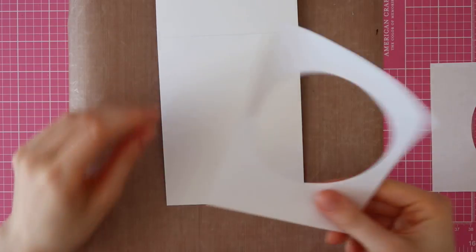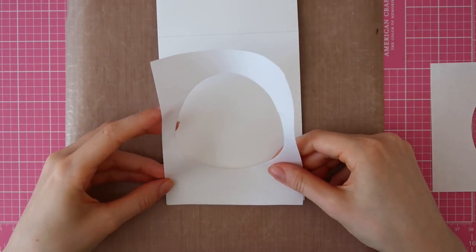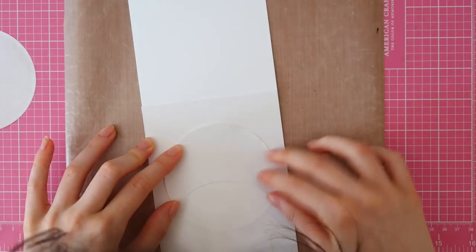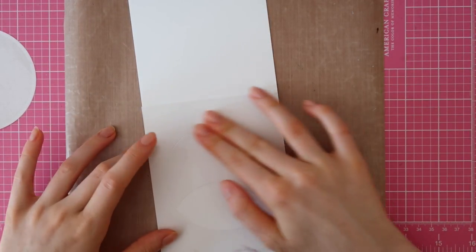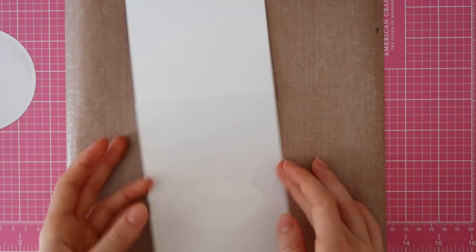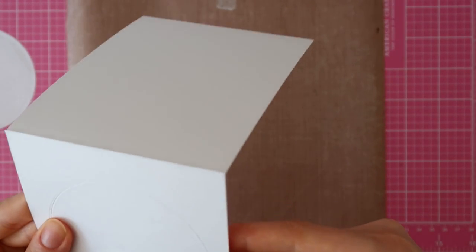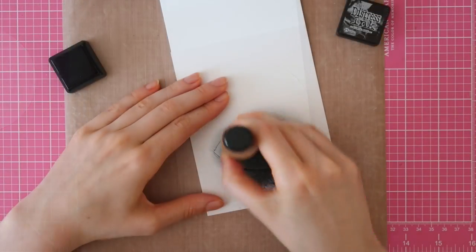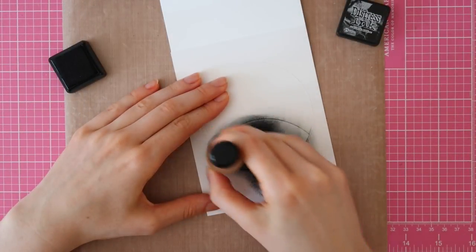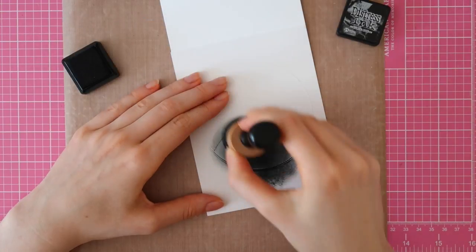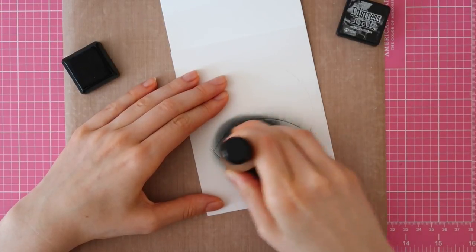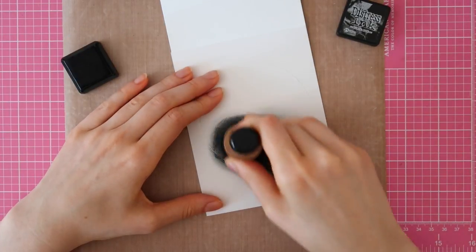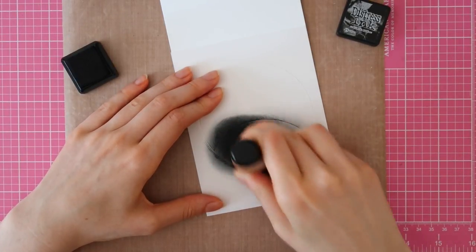Here I am going to adhere my mask to a standard size note card. This card measures four and a quarter inches by five and a half. Then I also put the other mask on there so that I could ink blend the border for this card. I'm using the Black Soot Distress Ink Pad for this, and I'm applying it heavily so that it's really a jet black color.